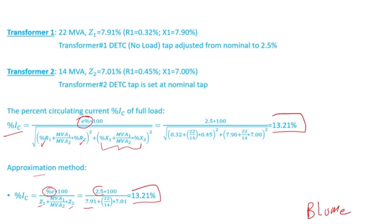22 plus 14 is 36 MVA total capacity of the parallel transformers. You take 13.21% of that - that's how much MVA will be caused by the circulating current due to the tap mismatch. And that's before you even load the transformer.